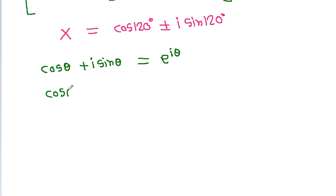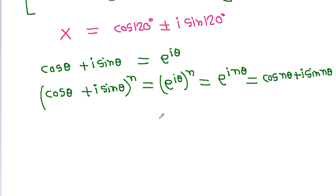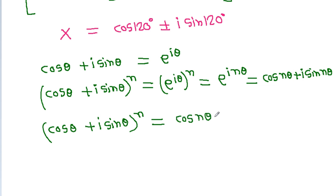So cos theta minus iota sin theta raised to power n will be equal to e to the power iota theta, raised to power n, and it will be equal to e to the power iota n theta. So it will be equal to cos n theta minus iota sin n theta. So cos theta minus iota sin theta raised to power n equals cos n theta minus iota sin n theta.